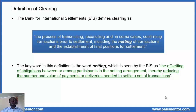There are many notions in this definition but the most important one is netting. The BIS defines netting as the offsetting of obligations between or among participants in the netting arrangement, thereby reducing the number and value of payments or deliveries needed to settle a set of transactions. So netting is a key part in the clearing process, involving the offsetting of obligations with the purpose of reducing the number of transfers needed.